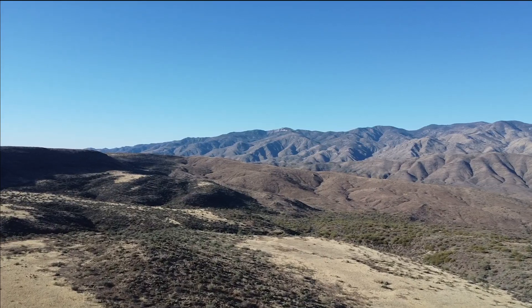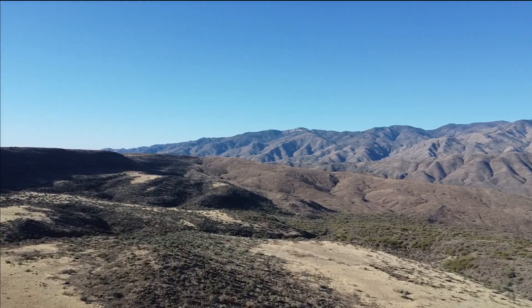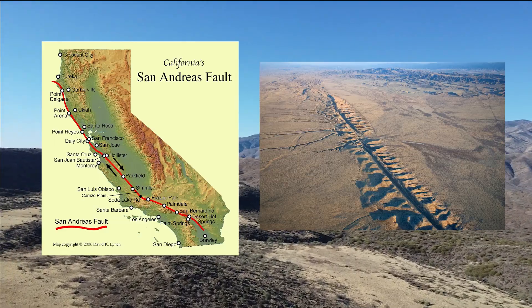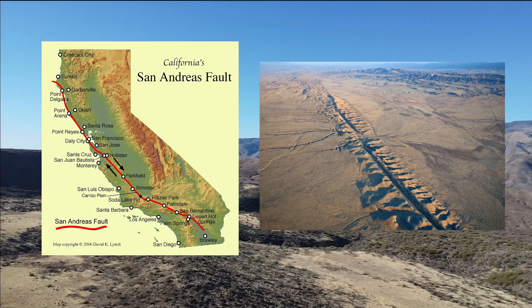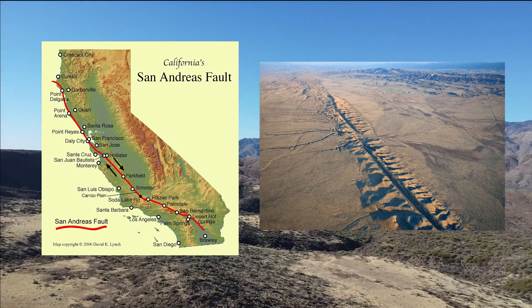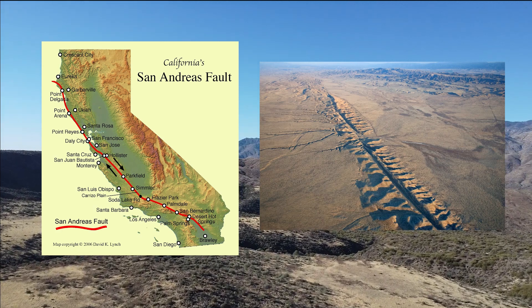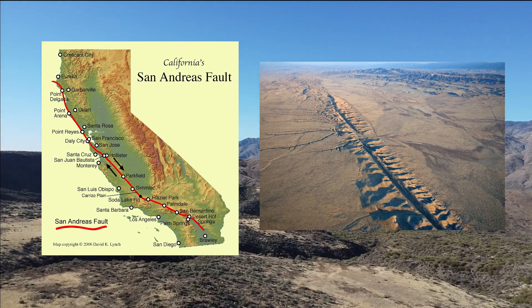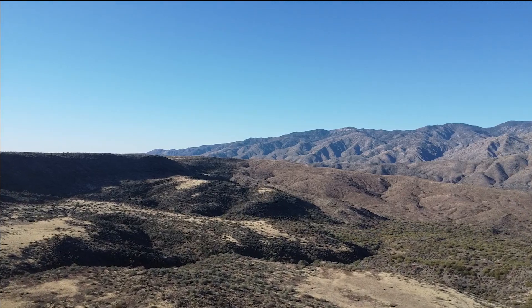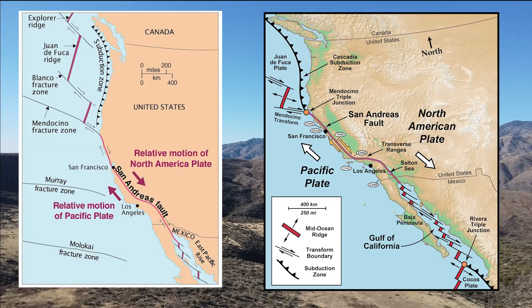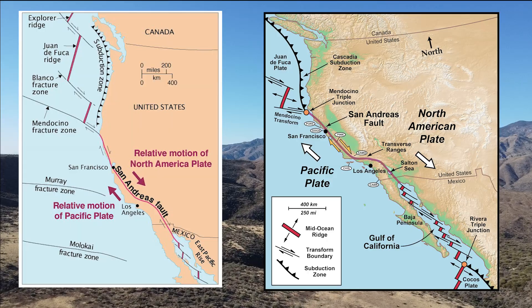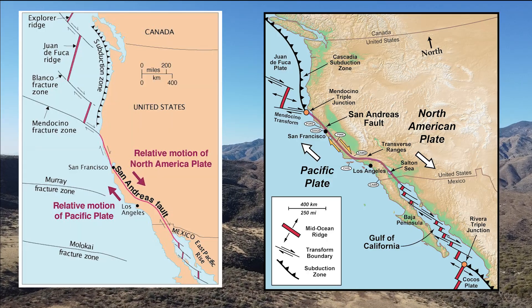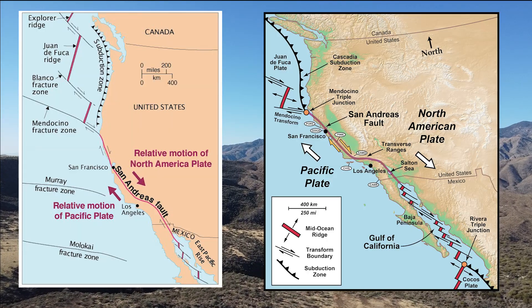Now many of you have heard of the San Andreas Fault. It's a transform boundary between the Pacific and North American plates. The Pacific Plate is roughly moving northwest.